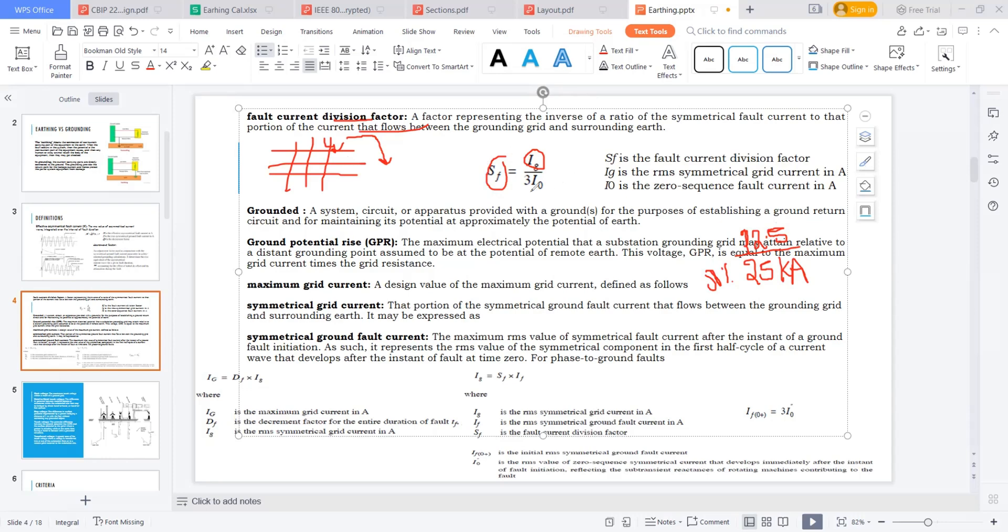Here, 3I₀ is the zero sequence fault current, which is the maximum fault current when a three-phase to ground fault occurs. All three phases are coming into the neutral. 3I₀ in the worst case: for 220kV, we consider 40kA; for 33kV, 25kA; for 132kV, 31.5kA; and for 400kV, 50kA or 63kA depending on the project.